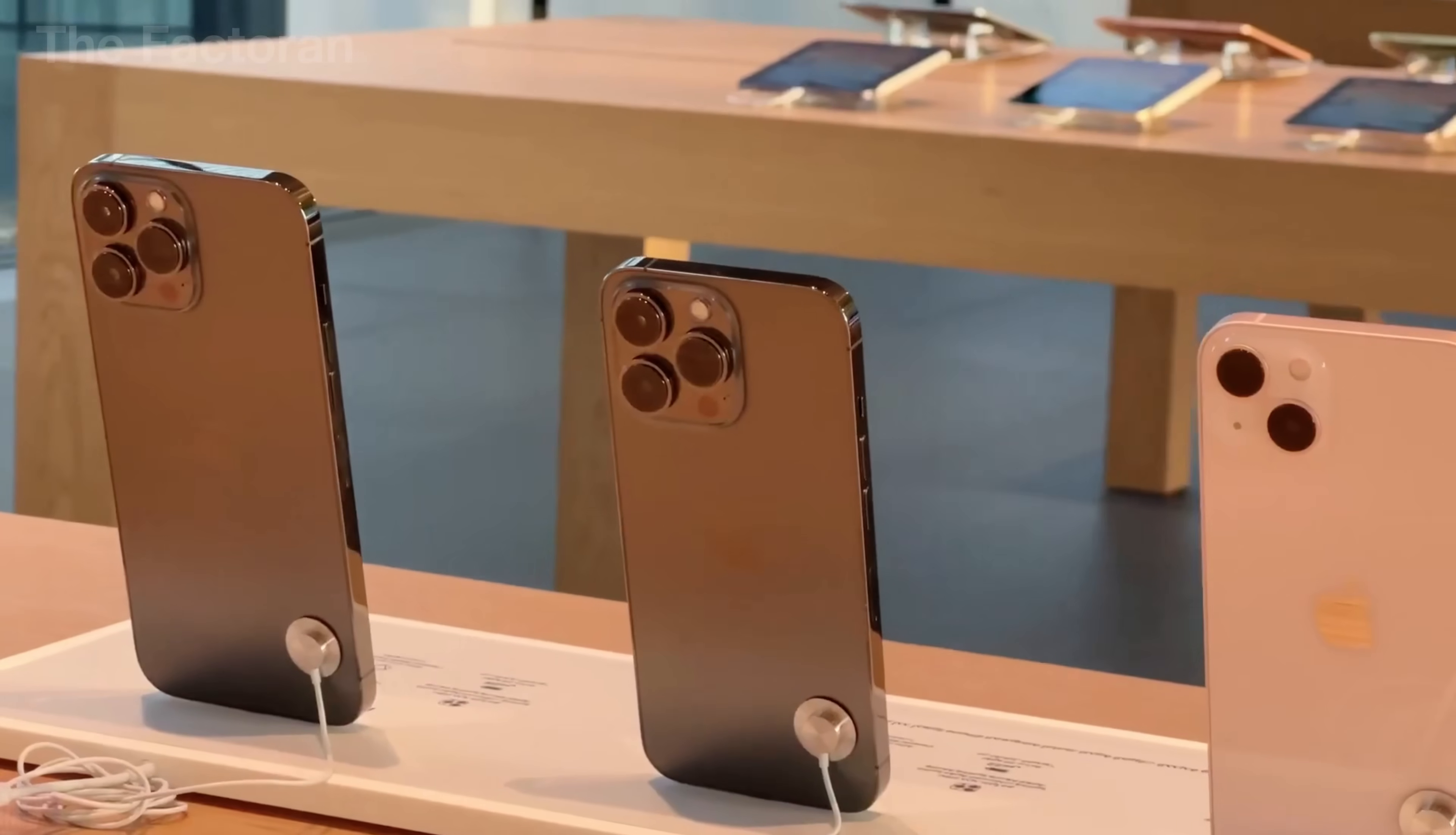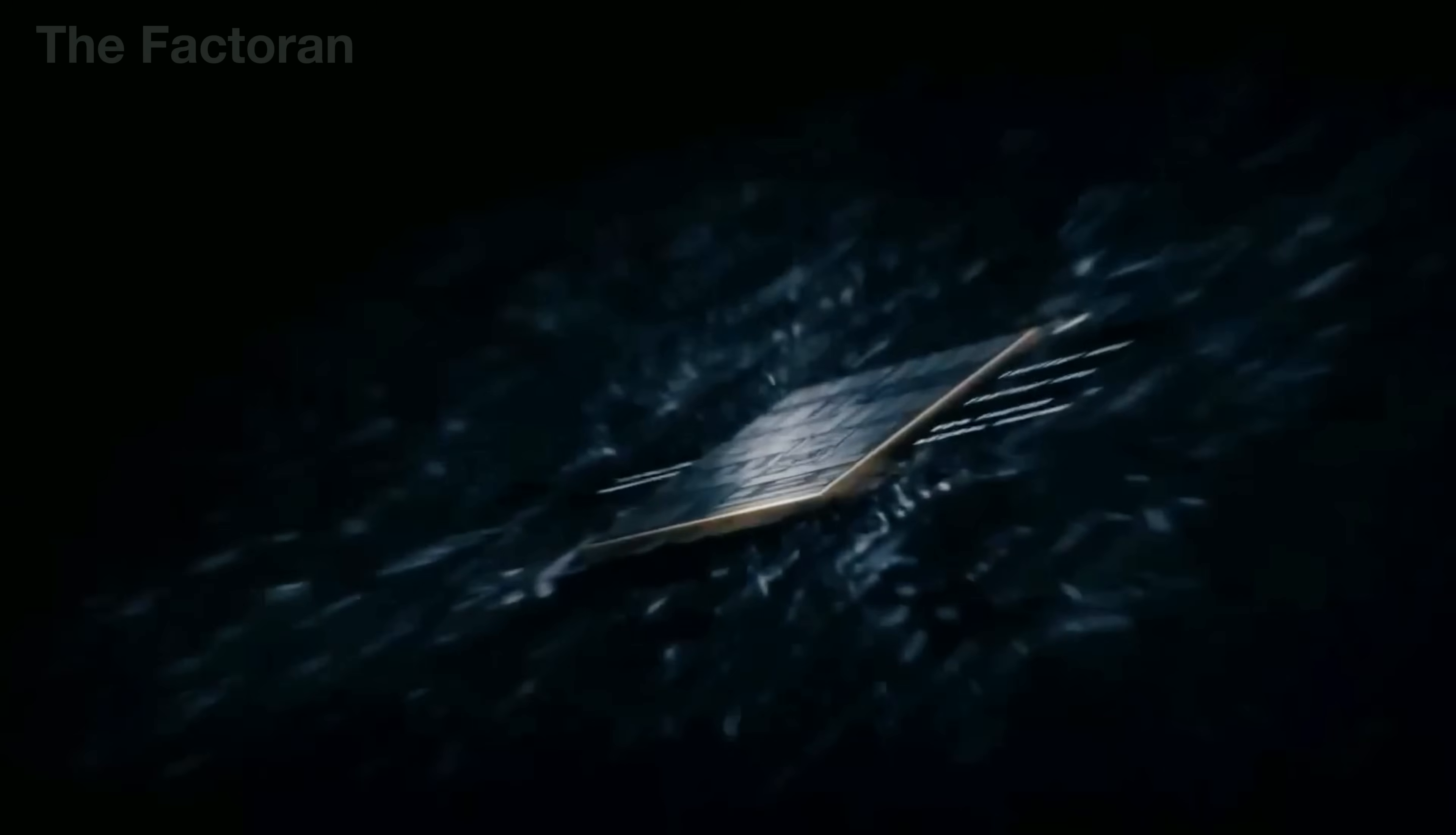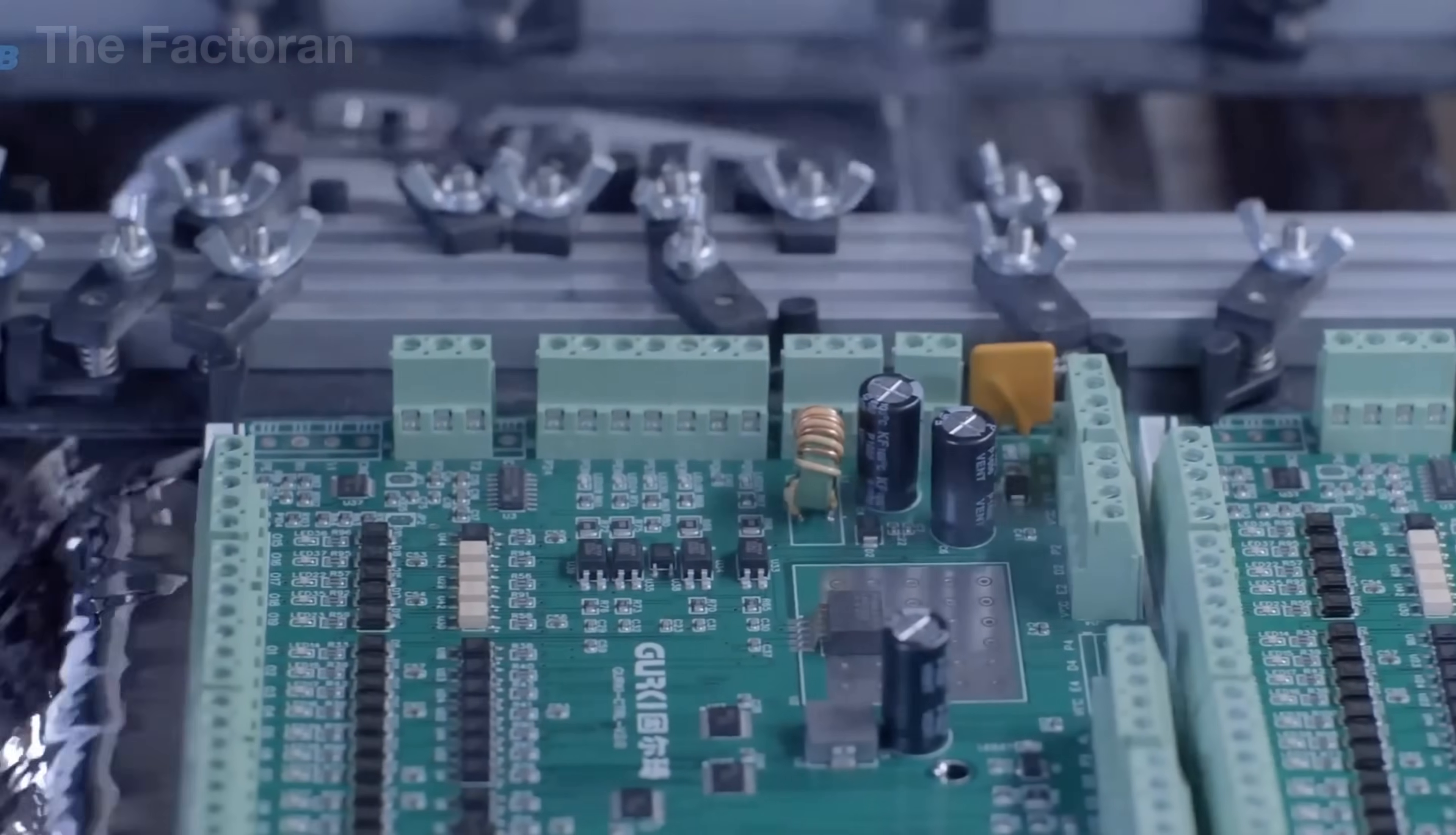Behind its minimalist exterior lies an incredibly complex production journey. From extracting bauxite to produce the aluminum frame, to manufacturing the screen in a space-grade cleanroom, every single iPhone must go through hundreds of precise and sophisticated steps before it finally rests in your hand.